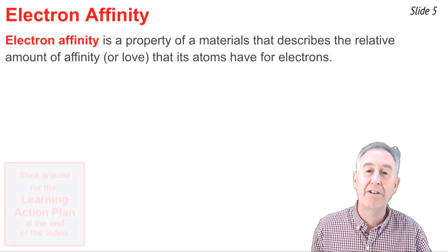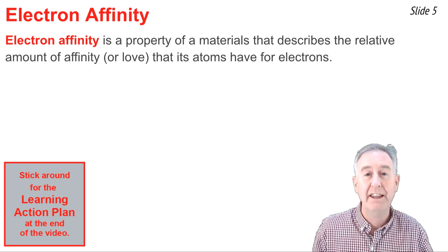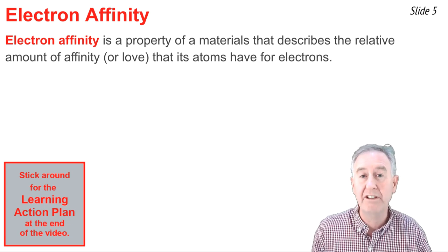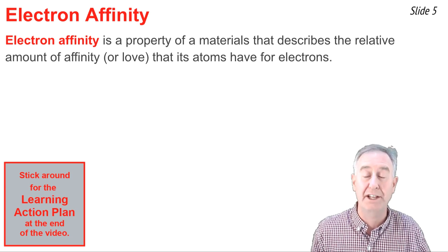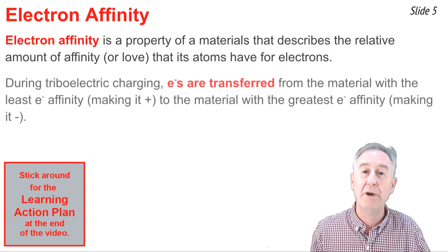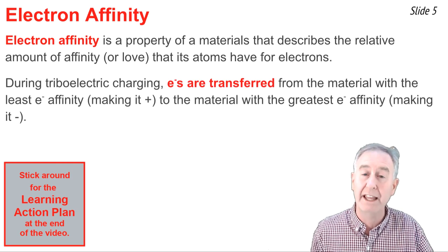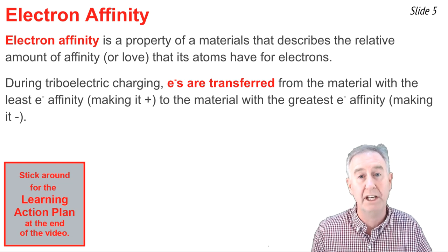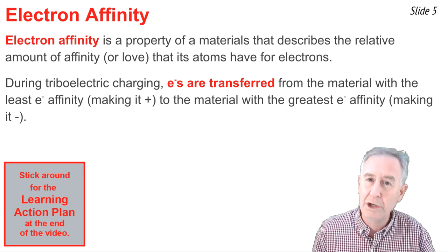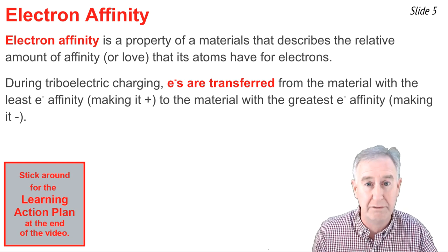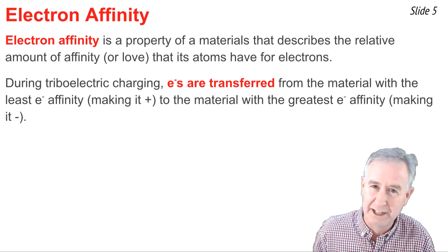A big part of our model for triboelectric charging is the property known as electron affinity. Electron affinity describes the relative amount of love or affinity or attraction that a material has for electrons. During the triboelectric charging process, electrons are transferred from the material that has the lowest electron affinity to the material with the greatest electron affinity. That leaves the material with the lowest electron affinity charged positively, and the material with the highest electron affinity charged negatively.